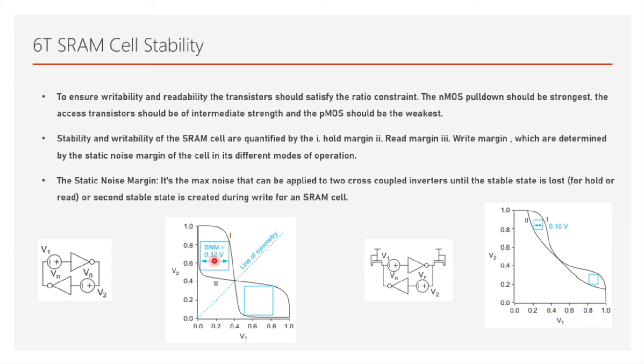One way to improve the read margin is by increasing the beta ratio — making the driver transistor much stronger than the access transistor. However, making the driver transistor stronger means making it wider, which occupies more area. This is the trade-off between area and noise margin.